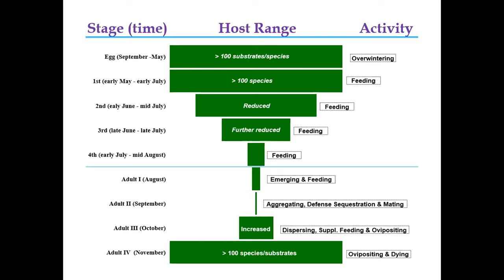By the adult stage, they will gradually disperse back to Ailanthus. After feeding, defense sequestration, mating, and egg breeding, they will disperse to other species as well. Eventually they return to the oviposition time and lay eggs on more than a hundred species or substrates. Some of the critical species, as previous presenters mentioned, are next, walnut, grapes, cherry, and maples at different stages.